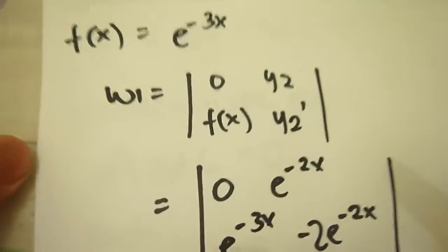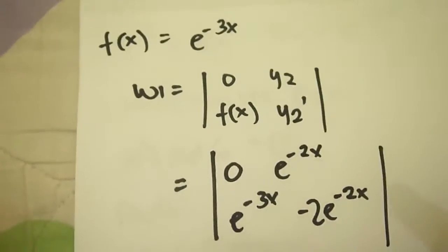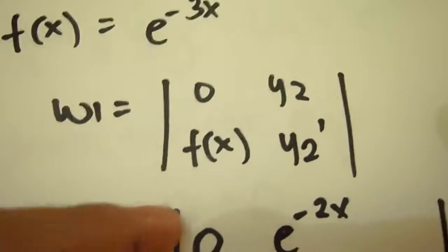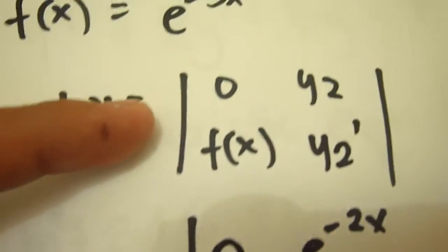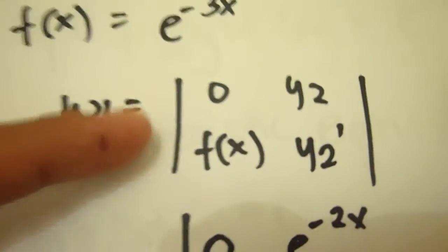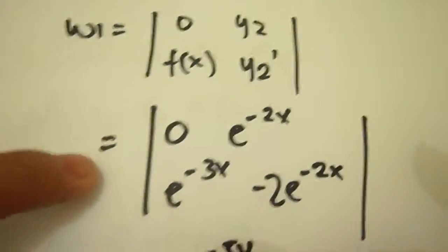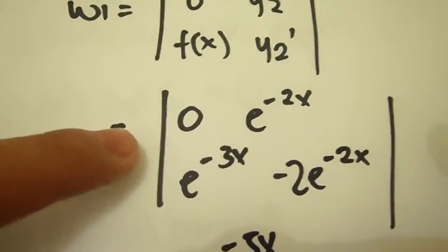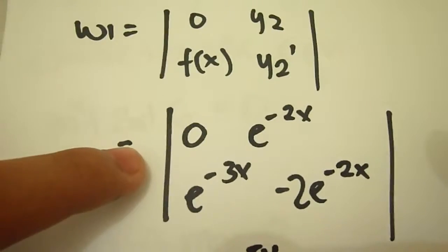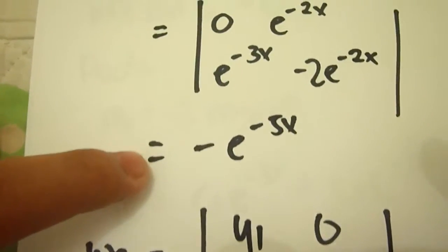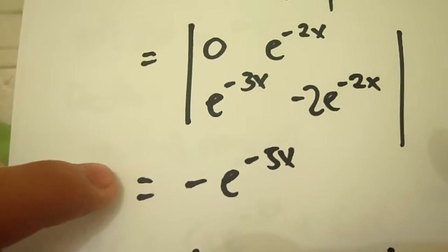Now we use the Wronskian method to find Omega 1. We set up the matrix with entries 0, f(x), y2, and y2 prime. After substituting the values, we get negative e to the negative 5x as our result for Omega 1.